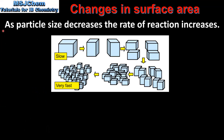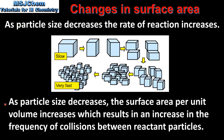Next we look at changes in surface area. As particle size decreases the rate of reaction increases, as we can see in this diagram. Large pieces react slowly and powders react very fast. The reason for this is that as particle size decreases, the surface area per unit volume increases, which results in an increase in the frequency of collisions between reactant particles. Large pieces have a small surface area per unit volume and powders have a very large surface area per unit volume. This explains why powders react much faster than large pieces.